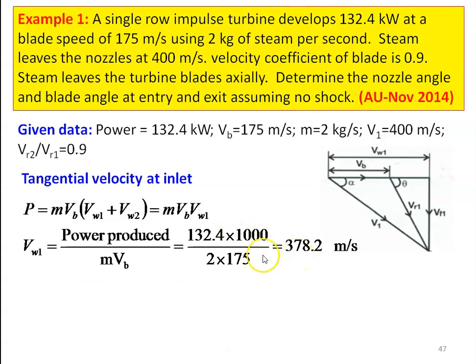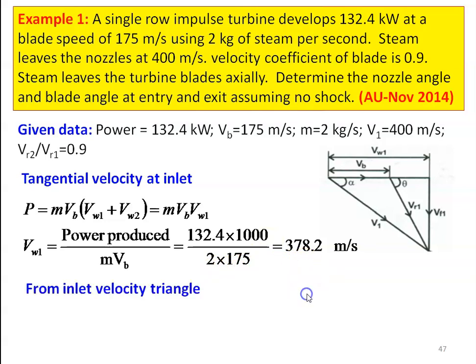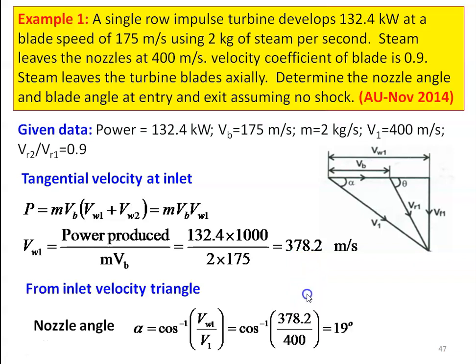For axial discharge, Vw2 = 0, so the tangential velocity Vw1 = power / (M × Vb) = 132.4 × 1000 / (2 × 175) = 378.2 meters per second. From the inlet velocity triangle, we calculate the nozzle angle: cos alpha = Vw1 / V1, so alpha = cos inverse of (378.2 / 400) = 19 degrees. Nozzle angle alpha equals 19 degrees.